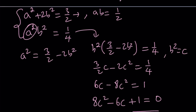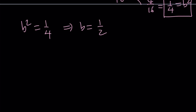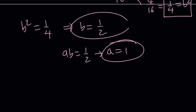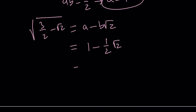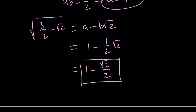Since a times b is also 1 half, and b is 1 half, this means a equals 1. So I got a equals 1, b equals 1 half. Our expression can be written as a minus b root 2, and since a is 1, this becomes 1 minus 1 half times root 2, or 1 minus root 2 over 2, as our final answer. That's the end of the first method. Let's take a look at the second method.